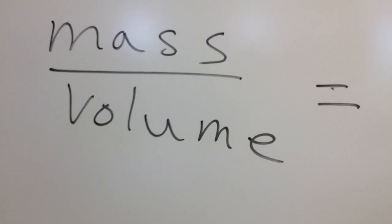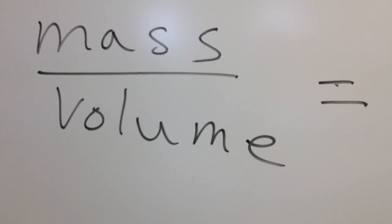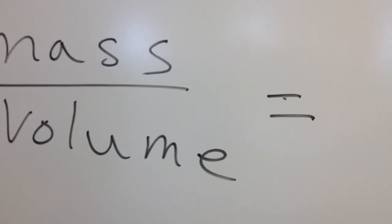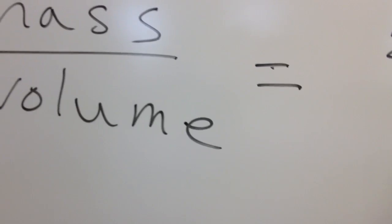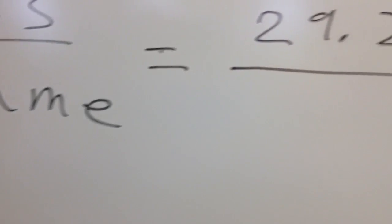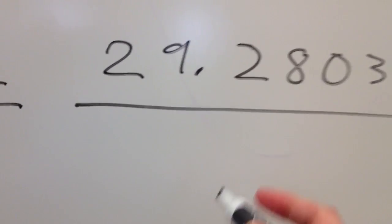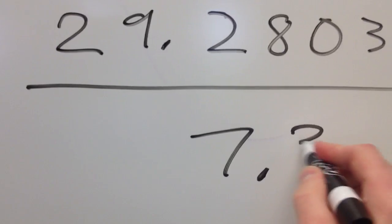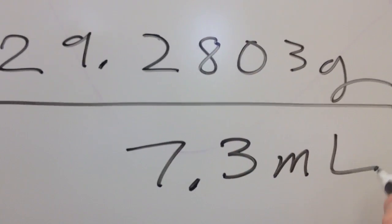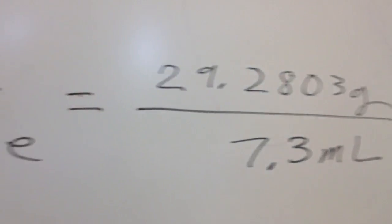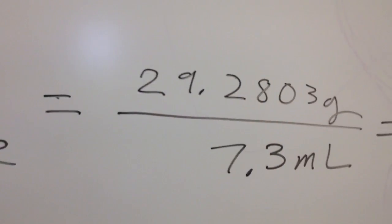But anyway, we've got mass, 29.2803 grams. Notice I used all the sig figs my balance gave me. I'm going to let my calculations destroy my sig figs, not sloppy lab recording. Divide the number on top. Mass divided by volume. So I'm going to take that into my calculator. Punch it in.